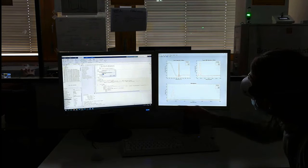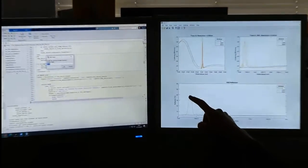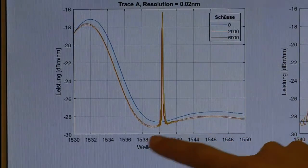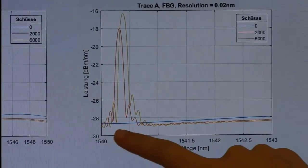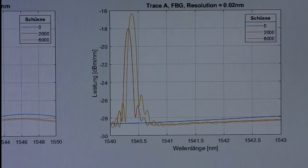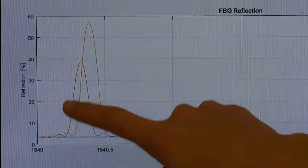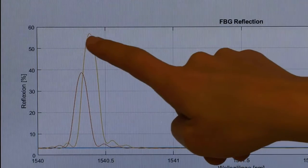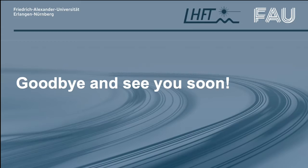In the last step we also look at the inscribed grating and the measurement data at the computer. Here you can see the measurement curves from before the inscription and of the two inscription steps we have performed. We see that after the first inscription our grating was close to 40% reflectivity and after the second process it has 58% reflectivity. The FBG looks great. Good work. See you next time in our laser lab.